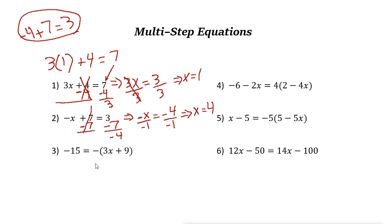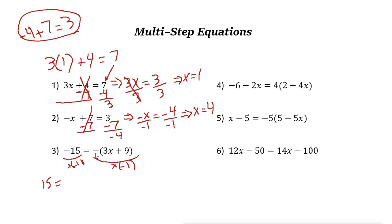Next one. This one seems more complicated than the previous one. Here we have a variable on one side, but negative 1 is multiplied by the whole parentheses. So let's get rid of this by multiplying both sides by negative 1. Negative 15 times negative 1 is just 15, and negative 1 times the negative cancels out, so it just becomes 3x plus 9.